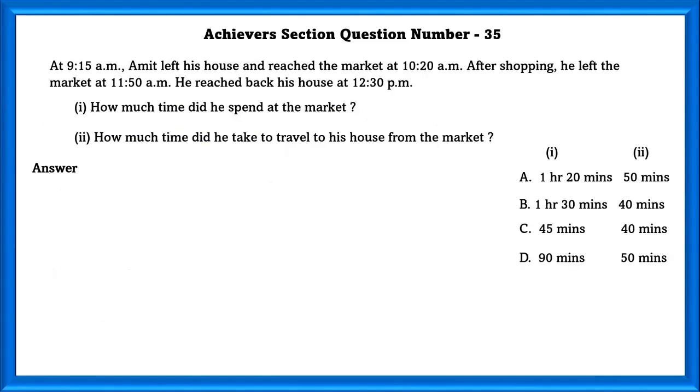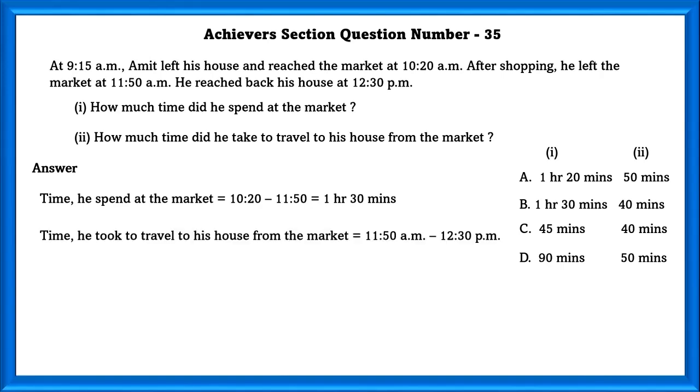Achievers section question number 35. At 9:15 a.m. Amit left his house and reached the market at 10:20 a.m. After shopping, he left the market at 11:50 a.m. He reached back at his house at 12:30 p.m. One, how much time did he spend at the market? Two, how much time did he take to travel from his house to the market? Time he spent at the market is equal to 10:20 minus 11:50 which is equal to 1 hour 30 minutes. Time he took to travel from his house from the market is equal to 40 minutes. That is the B option.